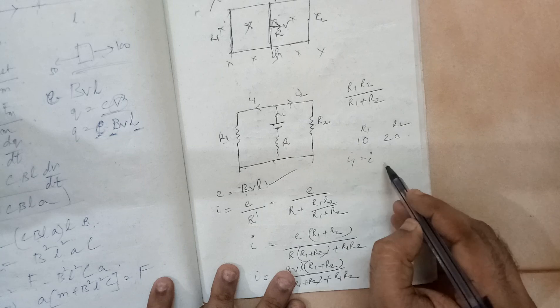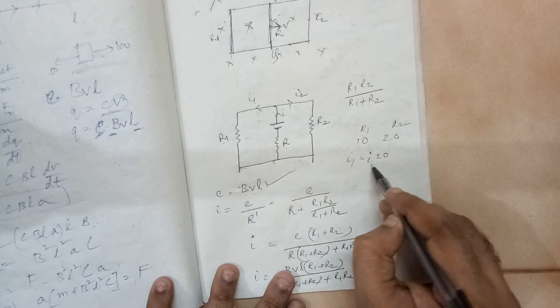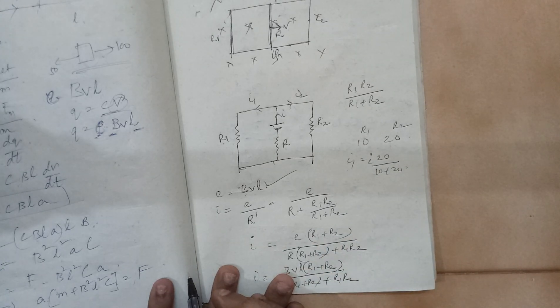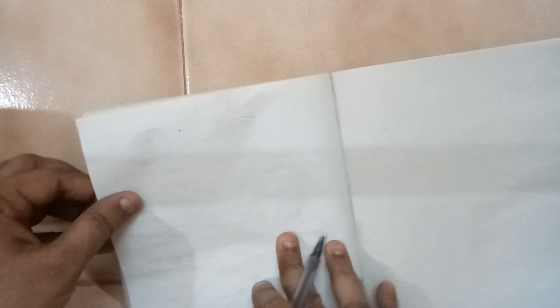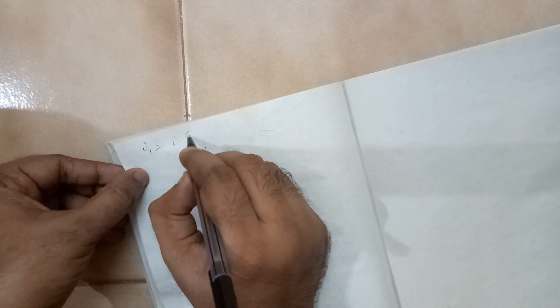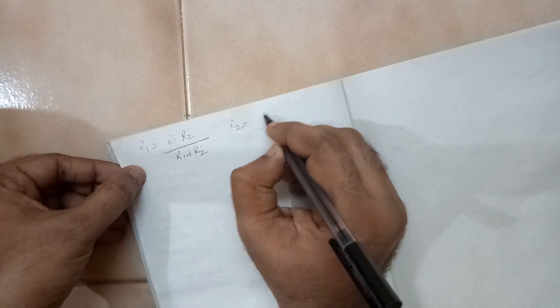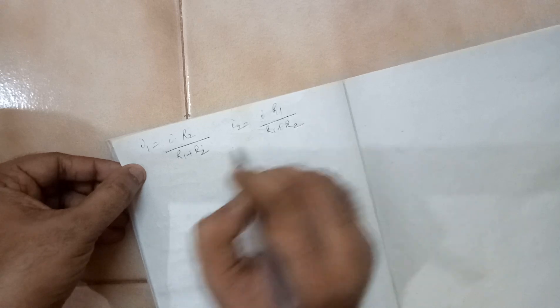I will be I multiplied by, for R1 I need to write R2, 20 divided by 10 plus R2. So I1 will be I into R2 divided by R1 plus R2, and I2 will be I into R1 divided by R1 plus R2.